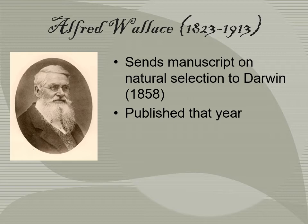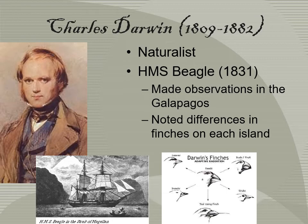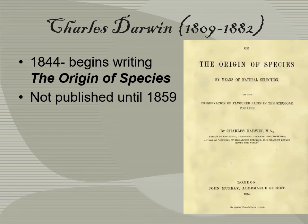Alfred Wallace sent a manuscript on natural selection to Darwin in 1858, and it was published that year. Charles Darwin was a naturalist — what we would now call a biologist. He set forth on his ship, the HMS Beagle, in 1831 and made observations in the Galapagos Islands, where he studied reptiles and finches and noticed the differences in finches on each island. He started writing The Origin of Species in 1844, though it wasn't published until 1859, partly because he was a perfectionist who wanted everything fully detailed and accurate.